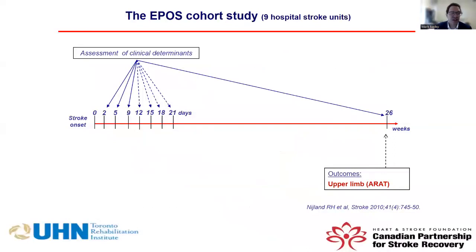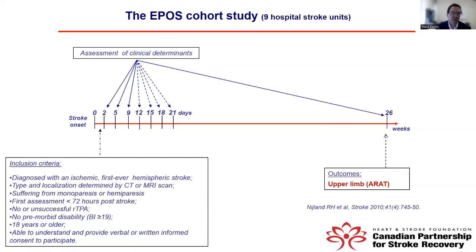This is a study from Nyland and colleagues from the Netherlands, where they looked at recovery amongst nine hospital stroke units. They examined individuals at 0, 2, 5, 9, 12, 15, 18, and 21 days to see if they could predict who did well at six months on the upper limb. People in this study were diagnosed with a first-ever hemispheric stroke, localized on CT or MRI, suffering from some form of impairment or paralysis, seen within the first 72 hours of stroke, with no premorbid disability and over 18 years of age.